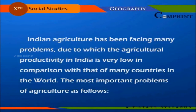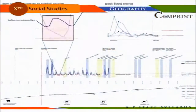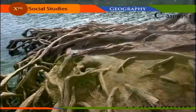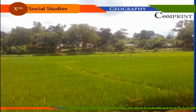Indian agriculture has been facing many problems due to which the agricultural productivity in India is very low in comparison with that of many countries in the world. The most important problems of agriculture are as follows: one, uncertainty of rainfall; two, soil erosion; three, fragmentation of land holdings.